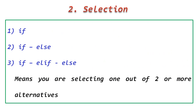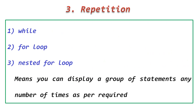Inside the selection category, examples include: if statement, if-else, if-elif-else — meaning you are selecting one out of two or more alternatives. For repetition, while loop and for loop are there, as well as nested for loop, meaning you can execute a group of statements any number of times as required, as defined inside the while loop, for loop, or nested for loop.